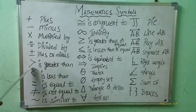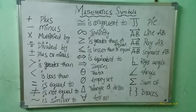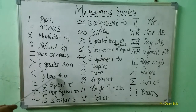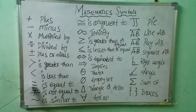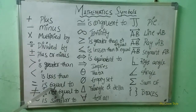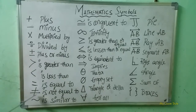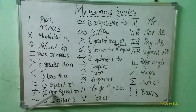This is a greater than symbol. This is a less than symbol. And next, here what is this symbol? This is an is equal to symbol. And next, here what is this symbol? This is an is not equal to symbol.